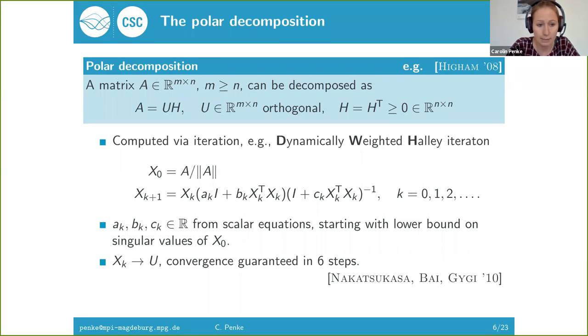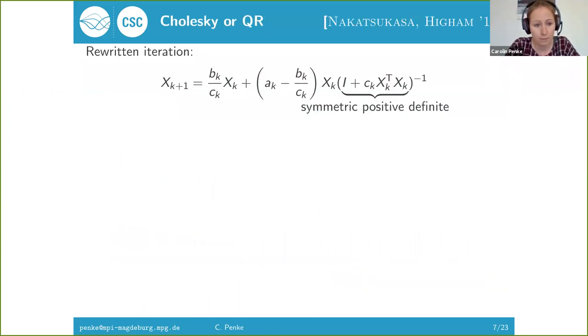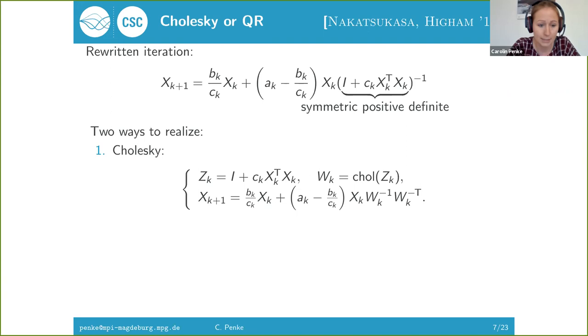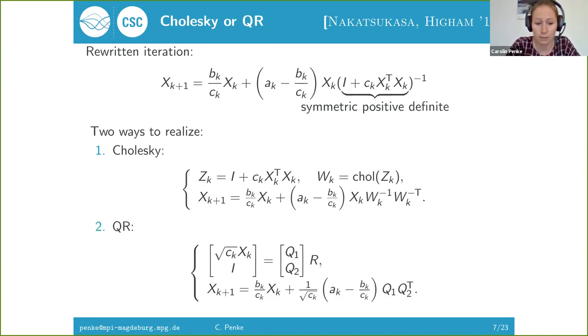How is it actually implemented? This iteration can be rewritten in this way, and here we see that the main computational effort for each iteration step is solving a symmetric positive definite linear system. This can be done in a straightforward way using a Cholesky factorization. It can also be done mathematically equivalent using a QR decomposition. The advantage of using this QR decomposition is that it is actually stable, but the Cholesky based iteration takes less effort.